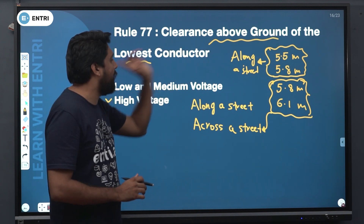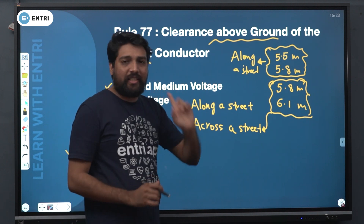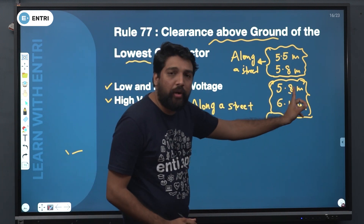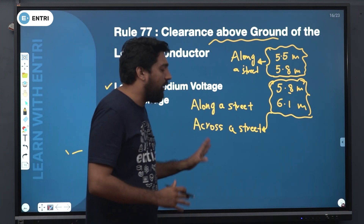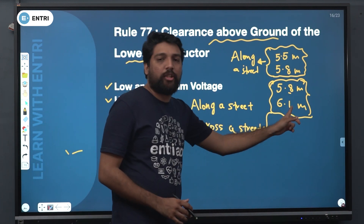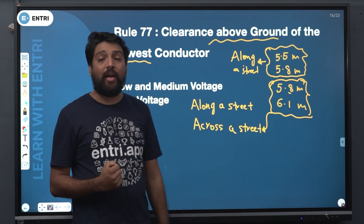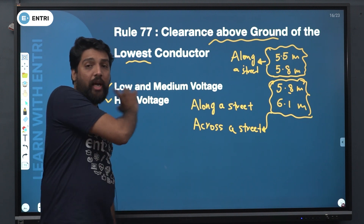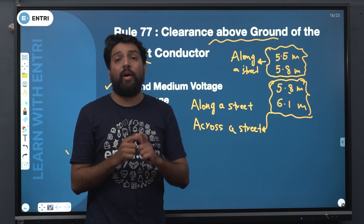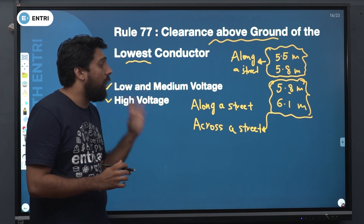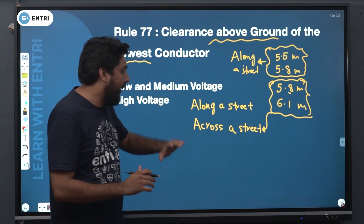For clearance above ground of the lowest conductor in a low and medium voltage line across a street, the value is 5.8 meters. For clearance above ground of the lowest conductor in a high voltage line across a street, the value is 6.1 meters. So the four values: along a street — 5.5 for low and medium voltage, 5.8 for high voltage; across a street — 5.8 and 6.1.